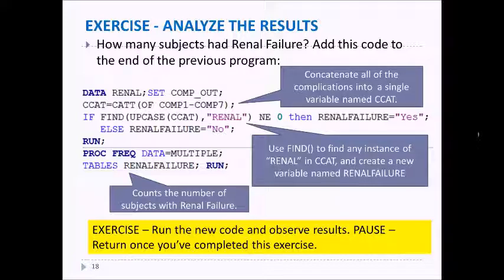We can answer this by adding this code to the end of the previous program. Let's say DATA RENAL; SET COMP_OUT; so we're going to use the transpose data set. We're going to concatenate all of them together using the CATT function—remember that from a previous tutorial—and then we're going to use the FIND function to see if the word 'renal' is in that concatenated variable. If it is in there, then we're going to say RENALFAILURE='Yes'; otherwise RENALFAILURE='No'. So what we're doing is identifying anyone that has renal failure somewhere in the list of complications—could be the first complication or the last one, it doesn't matter, it's going to be somewhere in there.